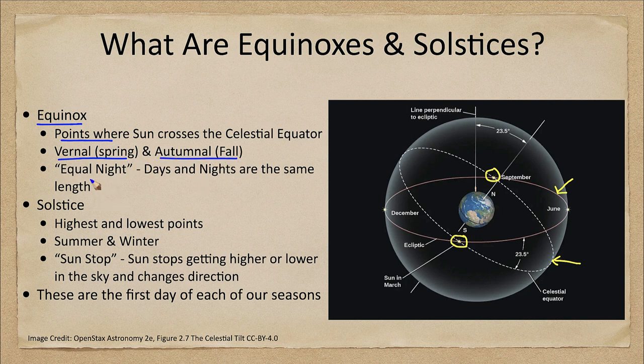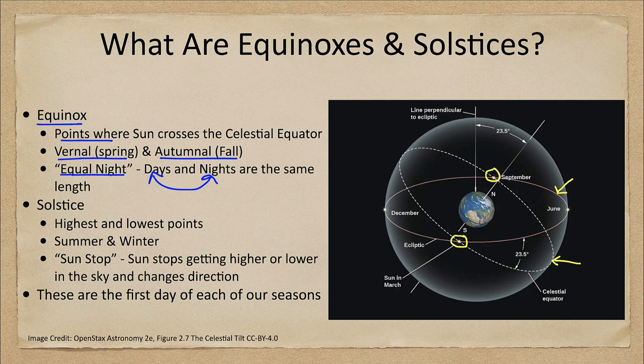So we have what we call the vernal equinox in spring and the autumnal equinox in fall. Equinox means equal night — that's when the days and nights are the same length, so on those days you would have 12 hours of daylight and 12 hours of darkness. Other days you would have different amounts depending on where the sun is in the sky.